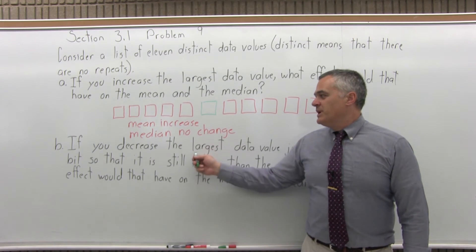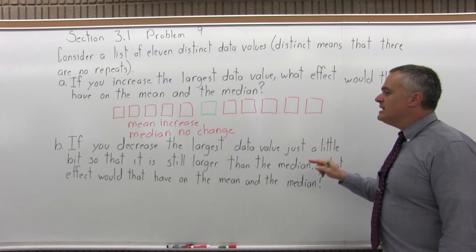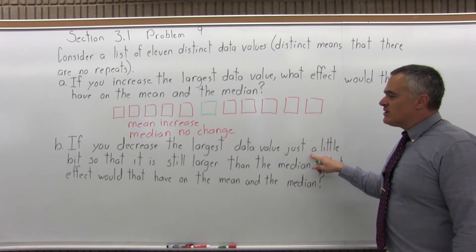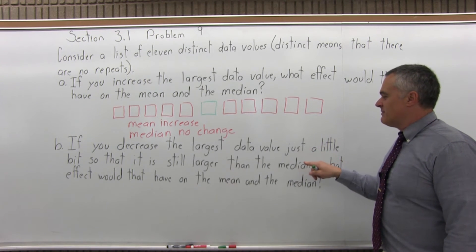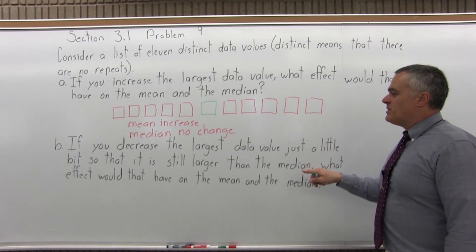Now for B, if you decrease the largest data value just a little bit, so that it's still larger than the median, what would be the effect on the mean and the median?